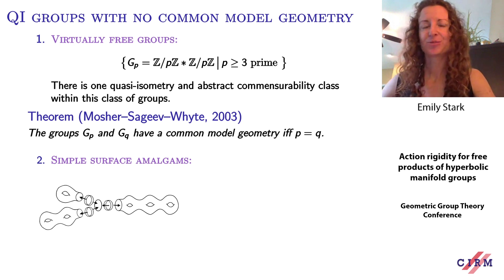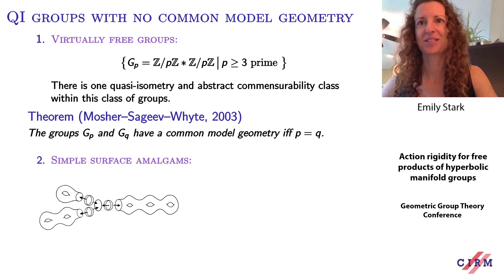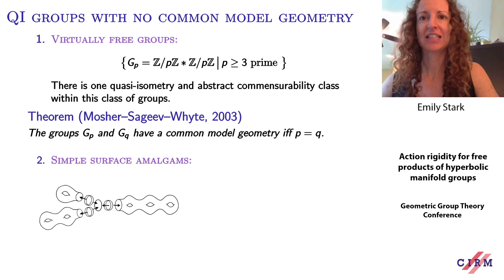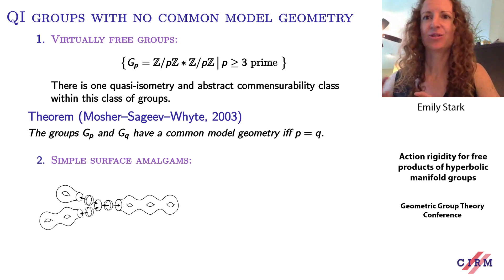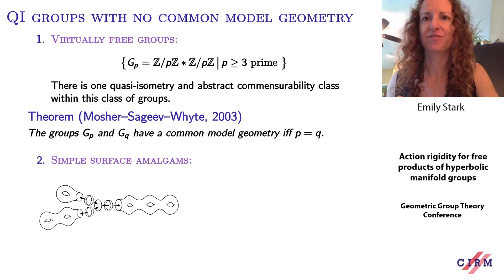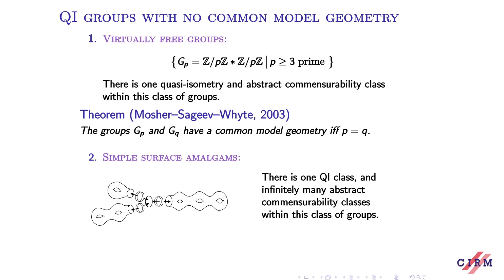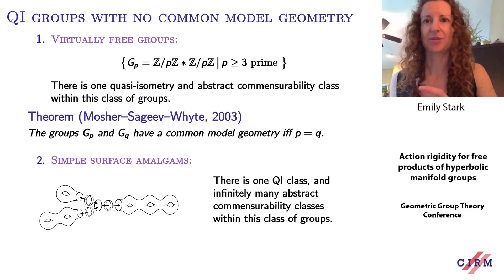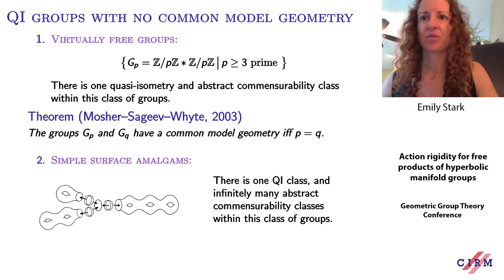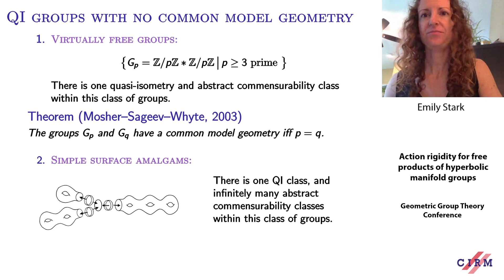As a second example of quasi-isometric groups that cannot act on the same proper geodesic metric space, consider simple surface amalgams. You fix some k at least three, take k surfaces with negative Euler characteristic and exactly one boundary component, and glue the surfaces together along their boundary components to get one singular curve. The amalgam is the fundamental group of this space. If you fix the number of surfaces, there is one quasi-isometry class among all such fundamental groups and infinitely many abstract commensurability classes, where the commensurability class depends on the list of Euler characteristics of the surfaces. So a simple surface amalgam is not quasi-isometrically rigid.